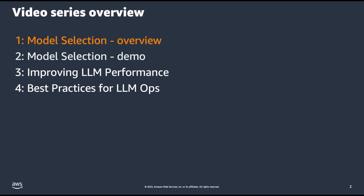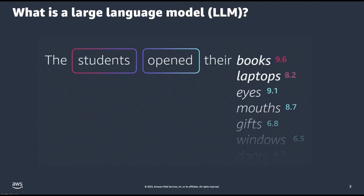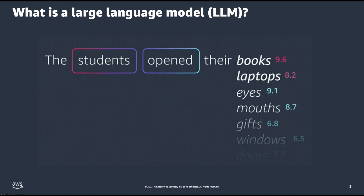But to start, what is a large language model? A large language model can be defined as a pre-trained deep learning model which can generate human-like text responses. Large language models take input text, called a prompt, and predict the next word or token in the sequence. For example, we have the input tokens "the students opened their" and the large language model is considering one of several next tokens.